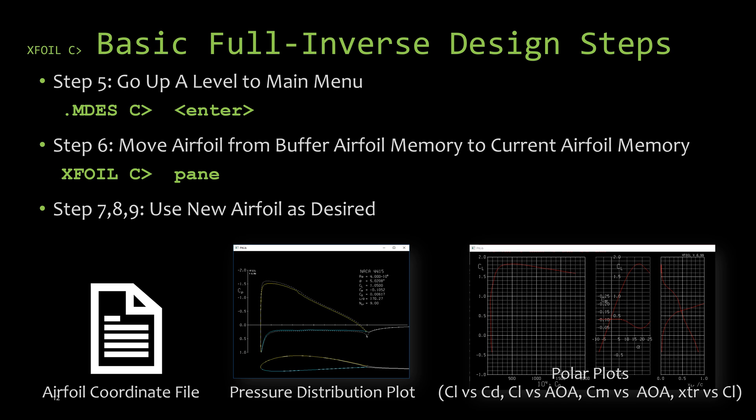After returning to the main menu, move the new airfoil from the buffer airfoil memory to the current airfoil memory using the PANE command. Once that's done, you have the new airfoil shape in the current airfoil memory. From here, you can do whatever you need — save off the airfoil coordinates, look at pressure distribution plots for off-design angles of attack, or examine polar plots. You now have the new airfoil shape and are able to do whatever you need with it.